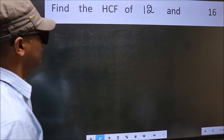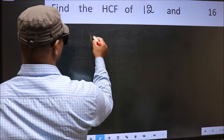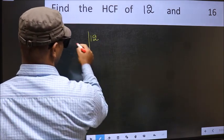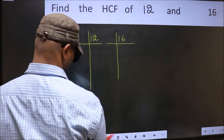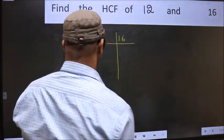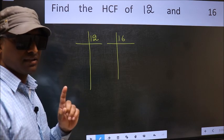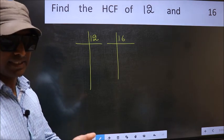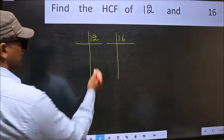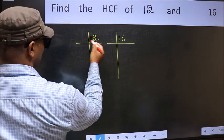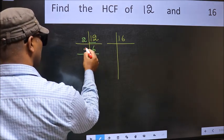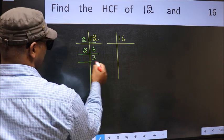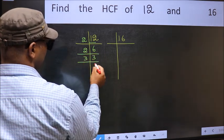What I mean is 12 and 16. This is your step 1. Now here we have 12. 12 is 2 times 6. 6 is 2 times 3. 3 is a prime number.